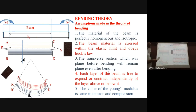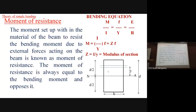The bending theory is most important. The assumptions made in the theory of simple bending — how the structure behaves against bending — is key. The flexure formula is M/I = f/y = E/R, and the bending moment equals section modulus multiplied by stress. This is necessary in our design.